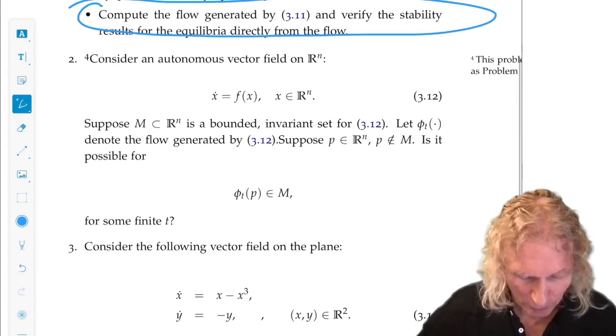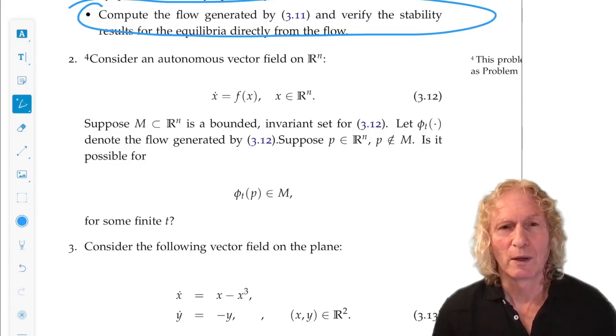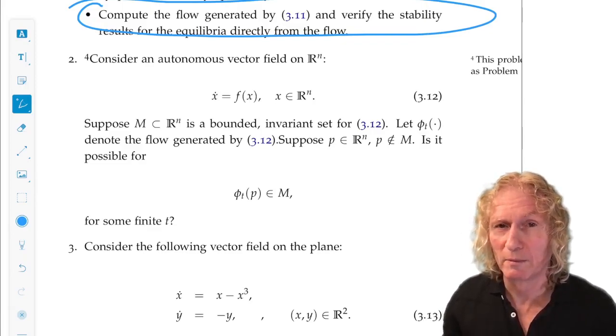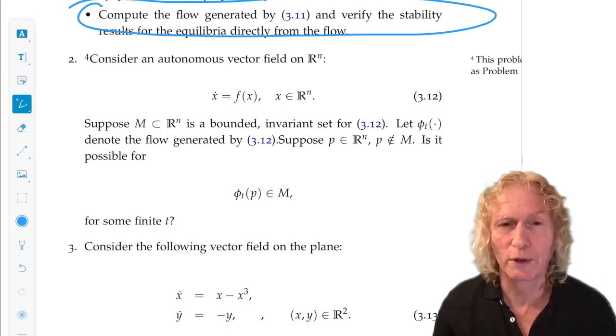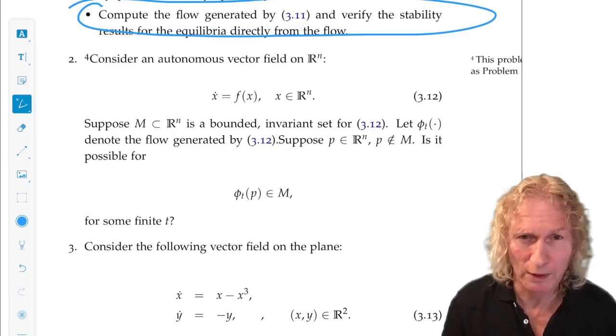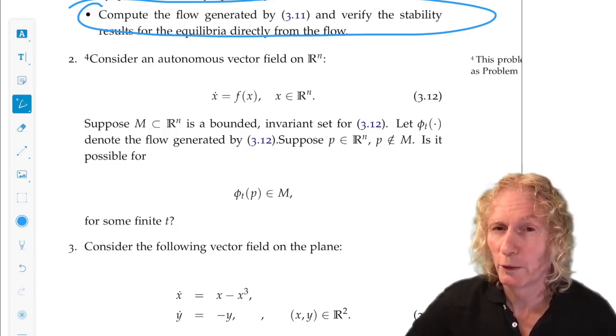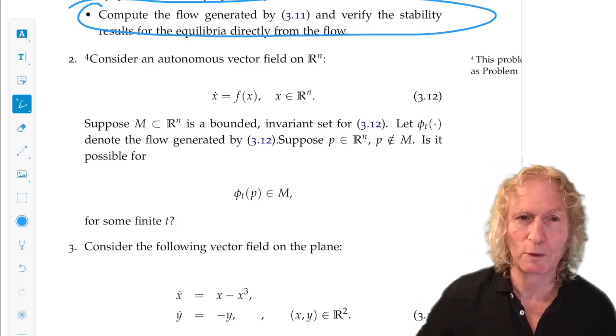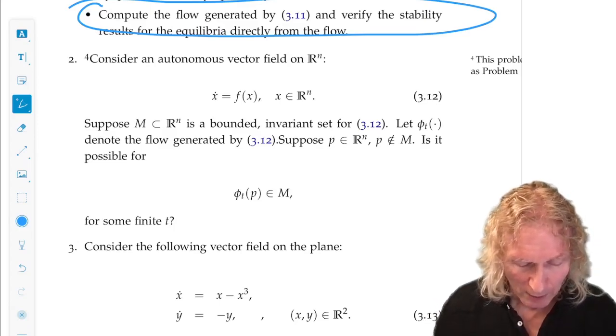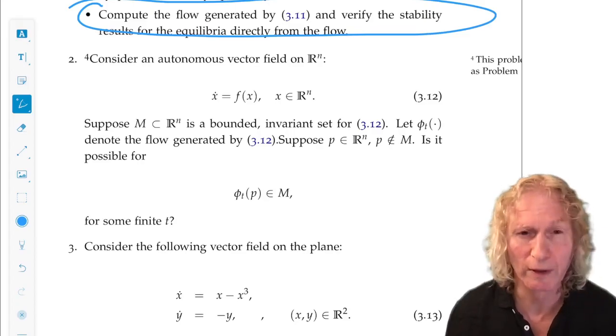All right. Problem two is something I mentioned last time, that an invariant set has the property that if you start in it, you stay in it. You can't get out. But also, you can't get in either. If you start outside, there's no way you're going to get into that invariant set in finite time. You may get closer and closer as time goes to infinity, but you're never going to get in that invariant set. This exercise is about proving that.